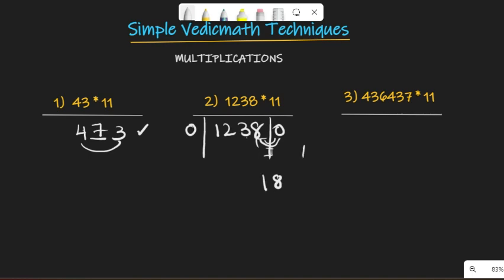And 2 plus 2, 2 plus 3, 6, 6. Sorry, 2 plus 3 is 5. 5 plus 1 is 6. 1 plus 2 is 3. And 0 plus 1, 1. Hope you get this.